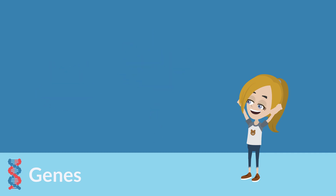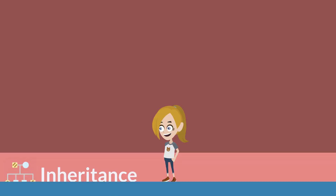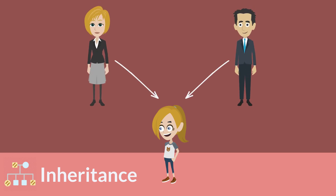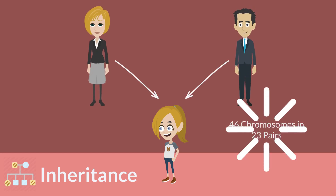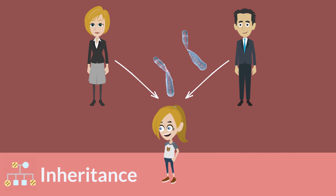All of the genes in Sarah's body make up what is called a genome. But where do Sarah's genes come from? Sarah, just like us, inherited her chromosomes — which contain her genes — from her parents. Chromosomes come in pairs, and Sarah has 46 chromosomes in 23 pairs. Sarah randomly got one of each pair of chromosomes from her mother and one of each pair from her father. This is why Sarah looks similar to her mother and father, because they share similar genes.